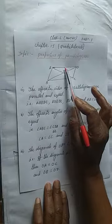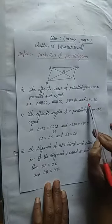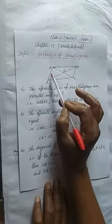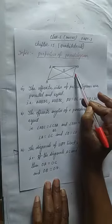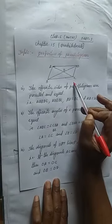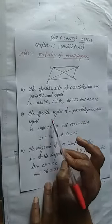Means this side is equal to this side. And AB equal to DC. Means AB, means this side is equal to this side. AB equal to DC. Now second property: the opposite angles of a parallelogram are equal.